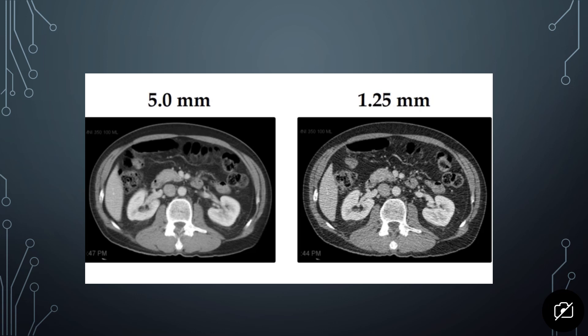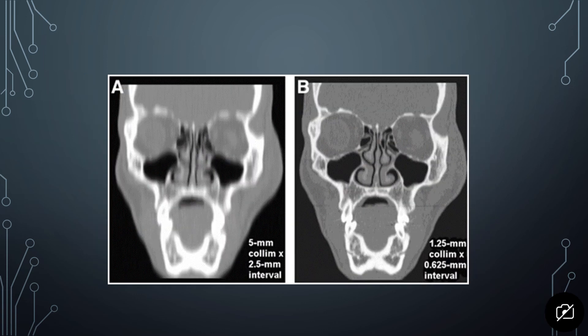The choice of thinner or thicker acquisition slices is largely dependent on the anatomy you're imaging. Thicker slices are beneficial for the abdomen because you have a lot of anatomy and benefit from better information per slice. For example, comparing 1.255 millimeters versus 5 millimeters: at 1.255mm there's a lot more noise, while at 5mm you see more detail with less noise. However, for a coronal slice of the head, 5mm is a really blurry image, whereas 1.25mm slices show much more detail. So head and sinus imaging benefits from thinner slices, while abdomen benefits from thicker slices.